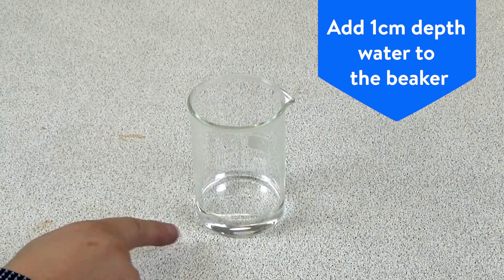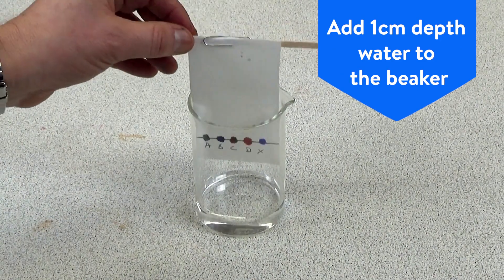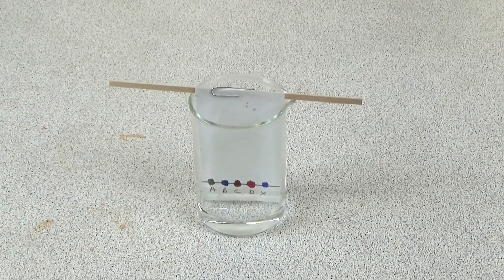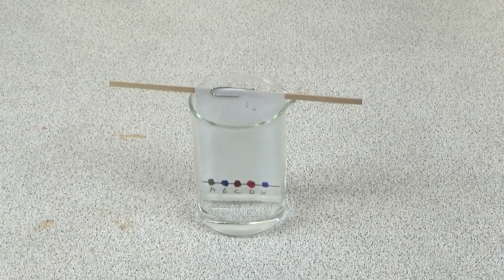We then put a centimetre depth of water in the beaker and suspend the chromatography paper so that the bottom of the paper is touching the water but the dyes themselves aren't in the water.